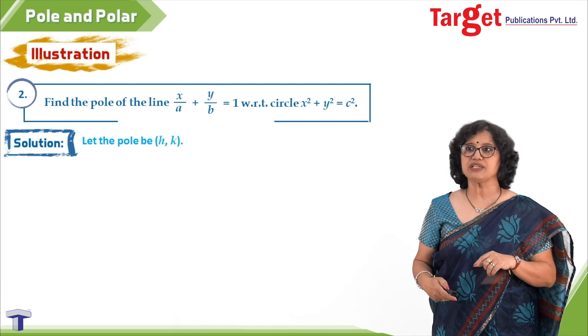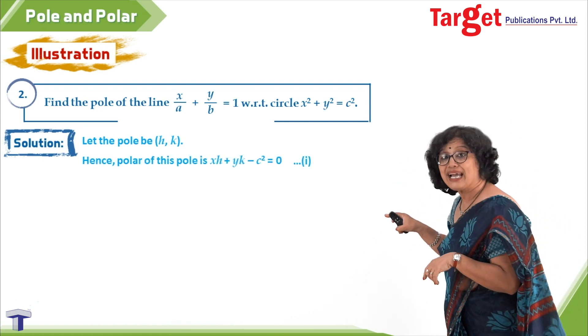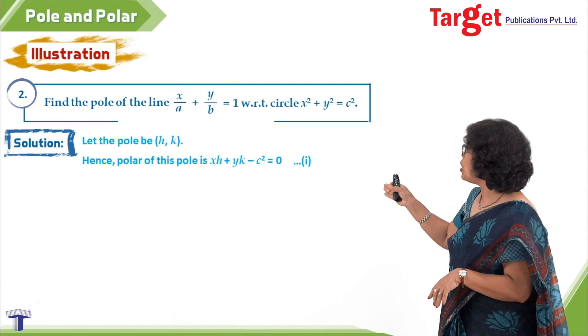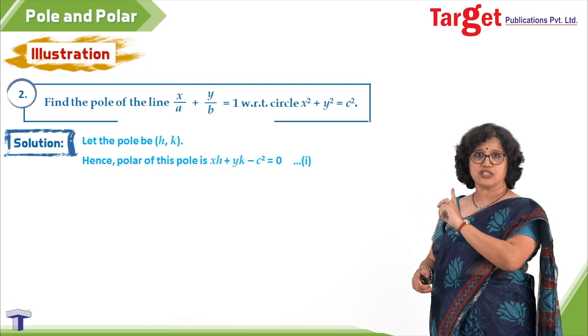And that polar's equation using the formula is xx₁ + yy₁ = a². Using that, you know how to write the equation of the polar. That I write as xh + yk - c² = 0. You can always compare this equation with the given polar.